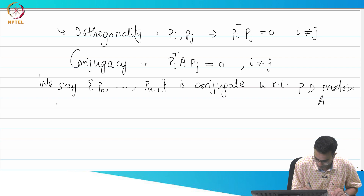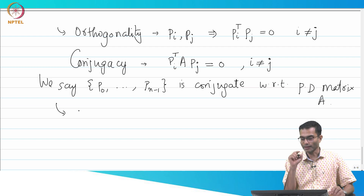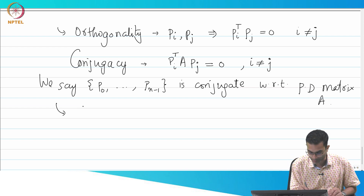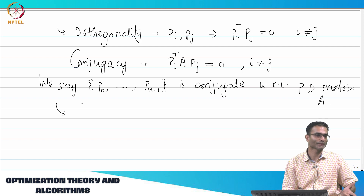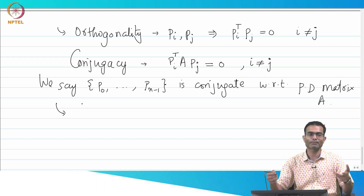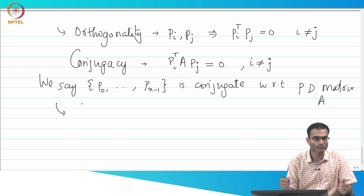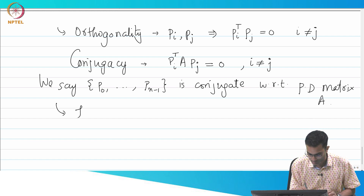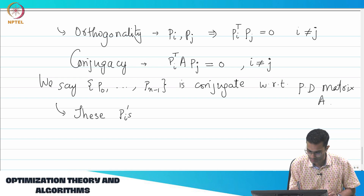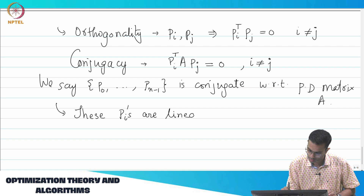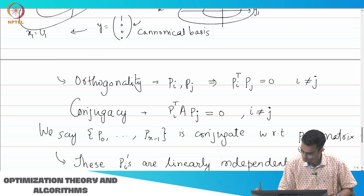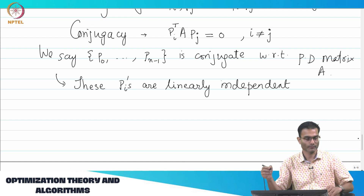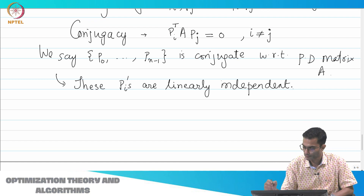Let us note it down. If these vectors are conjugate with respect to A, it turns out — any guesses? It is surprising, you would not expect it — these Pi's end up being linearly independent. Not at all clear from the definition.